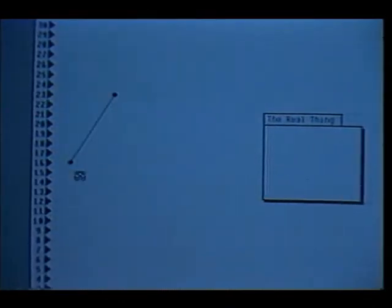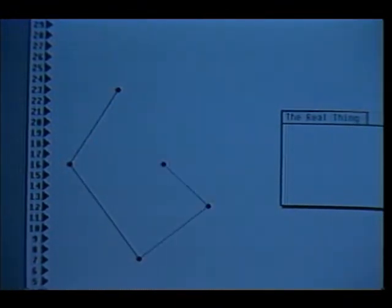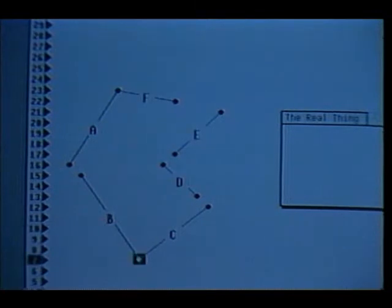Polygon scan conversion is a method for taking a list of xy coordinates that define a polygon and figuring out which pixels in the frame buffer are covered by such a polygon. The algorithm we will use processes the polygon one scan line at a time.